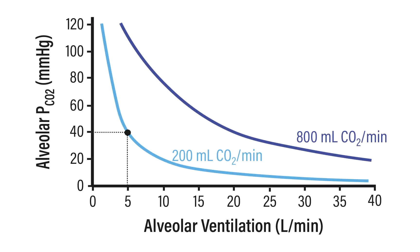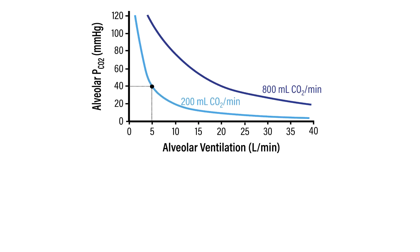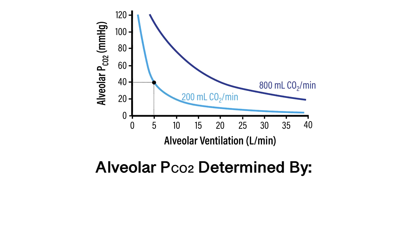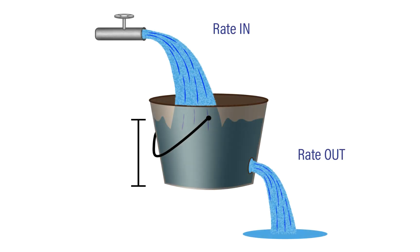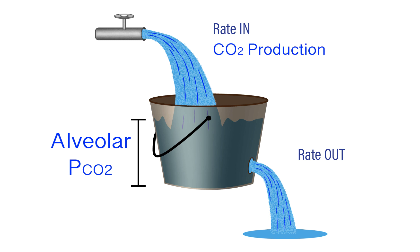That covers the determinants of the alveolar partial pressure of oxygen. What about the partial pressure of carbon dioxide? It's a similar relationship, but inverse, based on the source of carbon dioxide and how it is eliminated from the body. The two main determinants of alveolar PCO2 are: one, the rate of alveolar ventilation, and two, the rate of CO2 production. This can be modeled by our bucket with a hole in it, except the parameters have flipped — the rate in is metabolic CO2 entering the lungs, and the rate out is via alveolar ventilation.